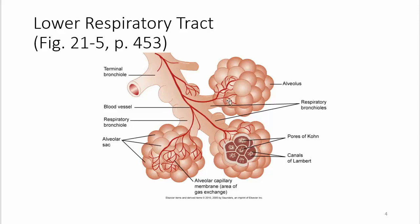The respiratory bronchioles lead into clusters of alveoli. Each alveolus is a little bubble. There are pores that join them and canals, but this is where the majority of gas exchange happens.